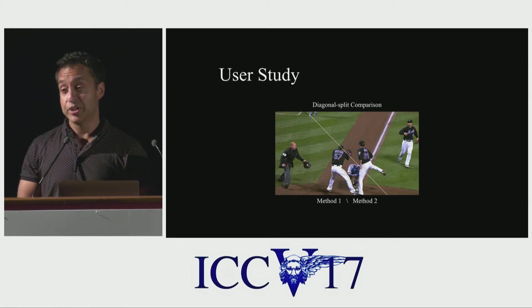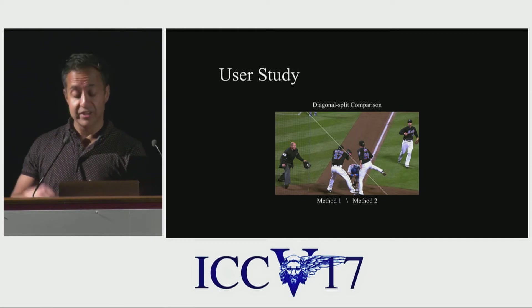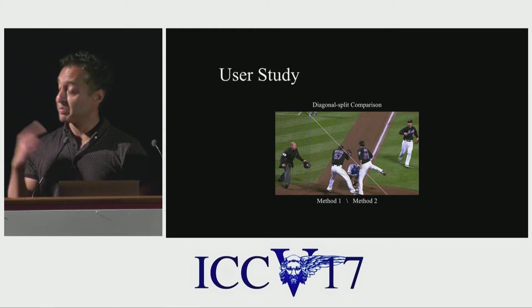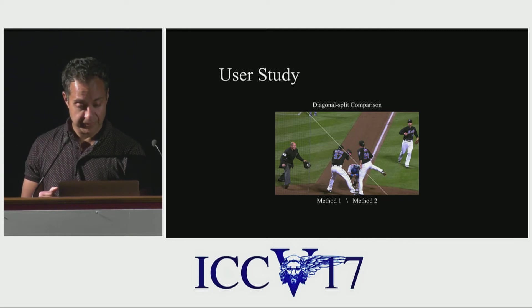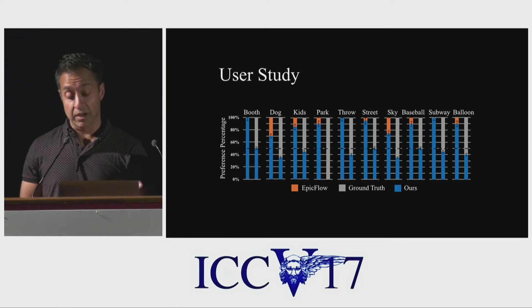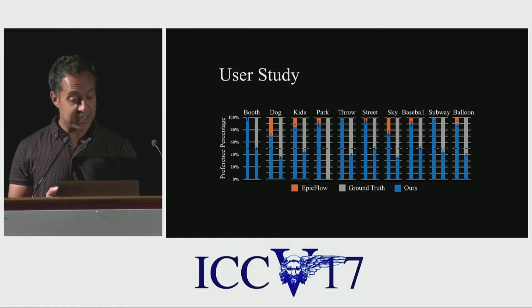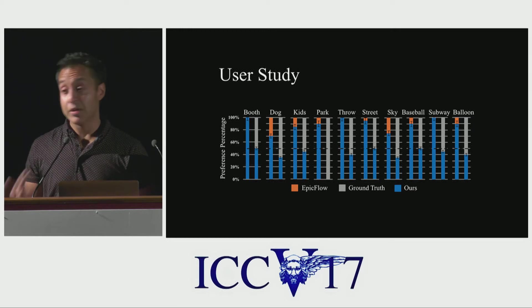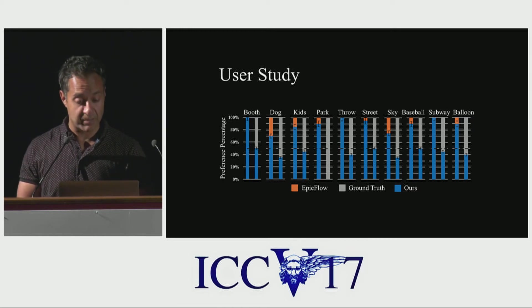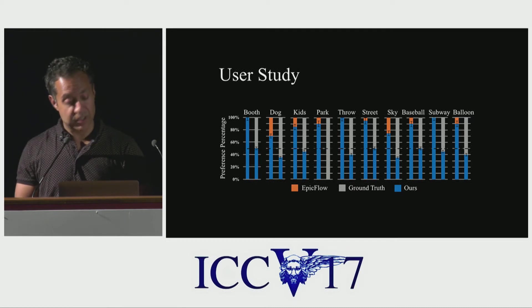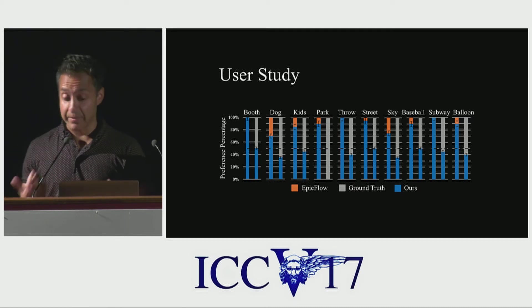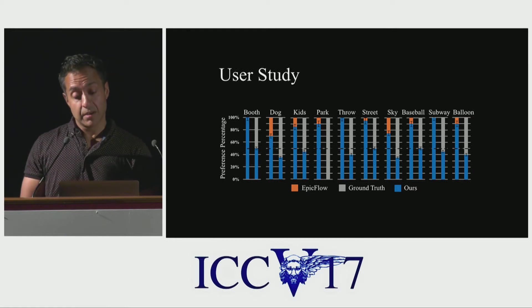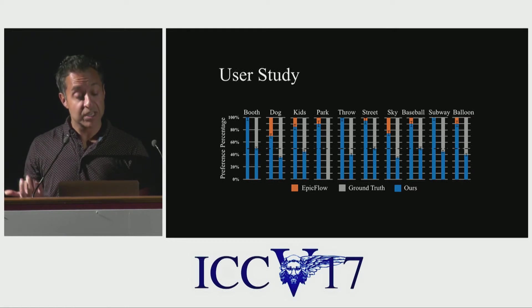We did a small user study. We showed users one method on the left and another on the right using a diagonal split, then played it again with the order reversed. Comparing to a state-of-the-art optical flow algorithm, EpicFlow, as well as ground truth: on the booth sequence, our method beats EpicFlow 100% of the time and beats ground truth about 50% of the time. On the park sequence, there are a few examples where EpicFlow wins, but not many, and ground truth is better — but in many examples we're doing nearly as well as ground truth and beating EpicFlow throughout.